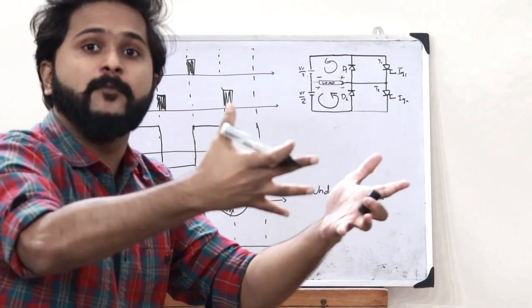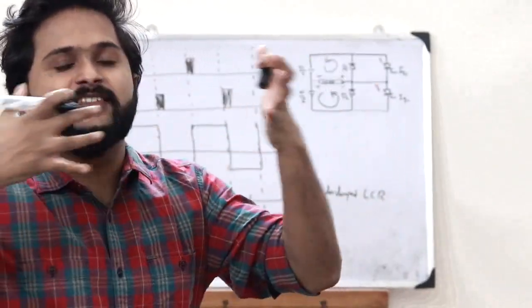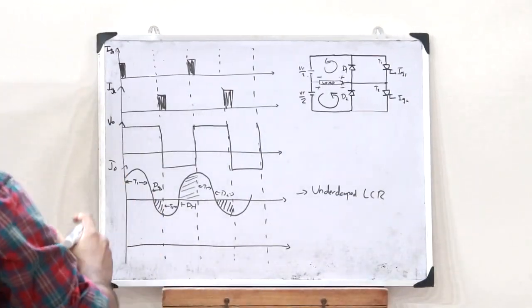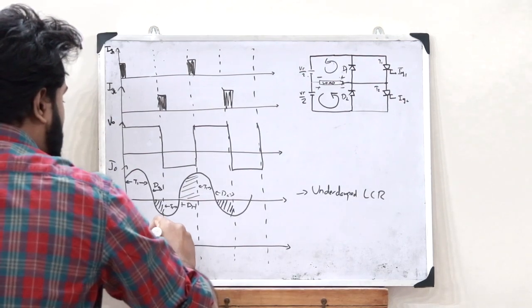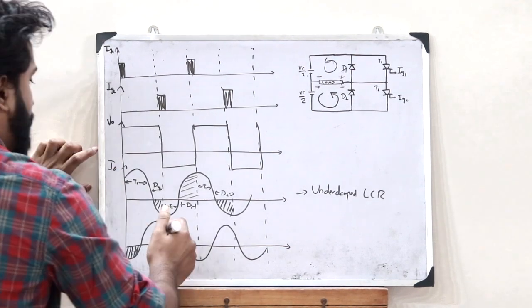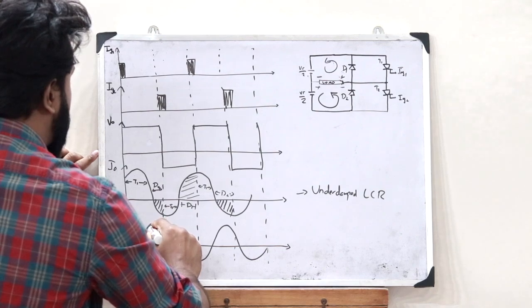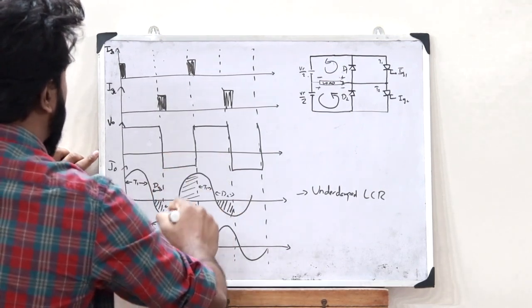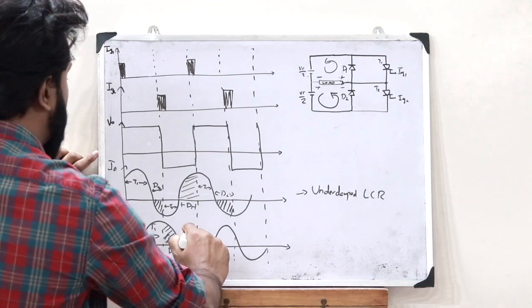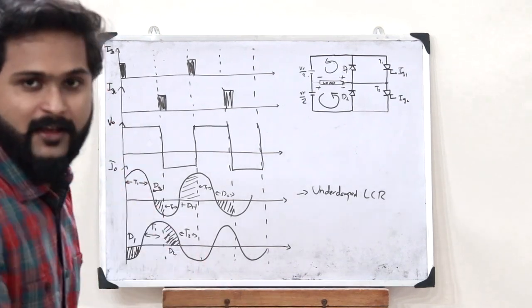Next, let us see the case when we use an over-damped LCR as the load. When we use an over-damped LCR, the current lags behind the voltage. So a lagging current waveform is obtained. Here, when the voltage is positive and the current is negative, D1 is conducting. When the voltage is positive and the current is also positive, T1 is on. When the voltage is negative and the current is positive, that happens due to T2. And when both the voltage and current are negative, that also happens due to T2. These are the basic waveforms associated with a single-phase half-bridge inverter.